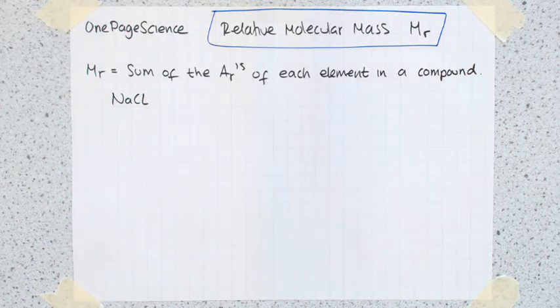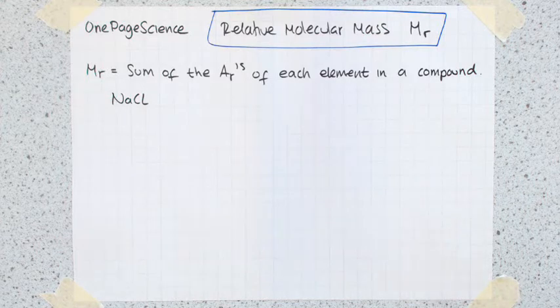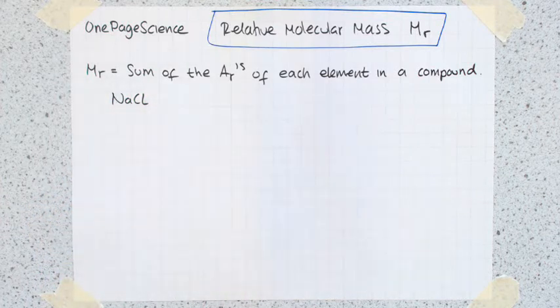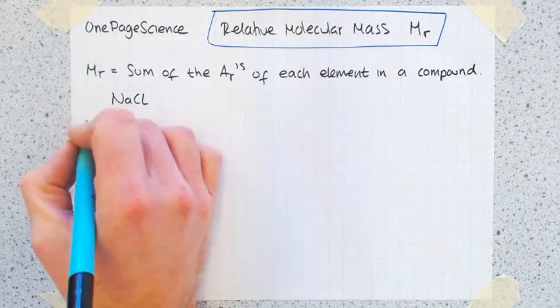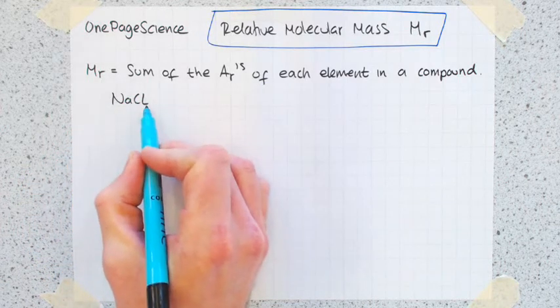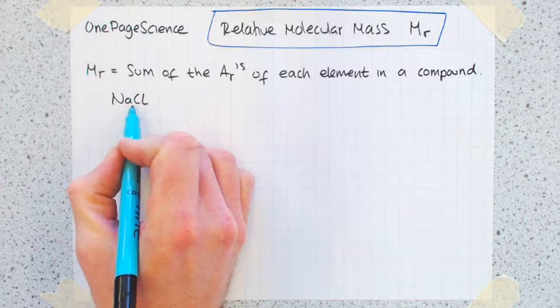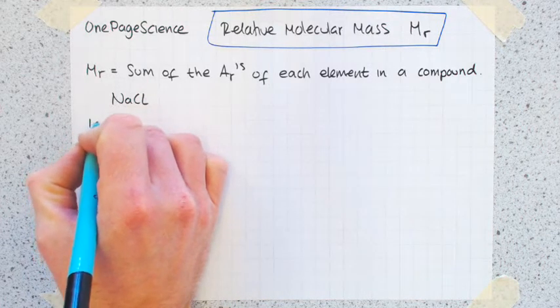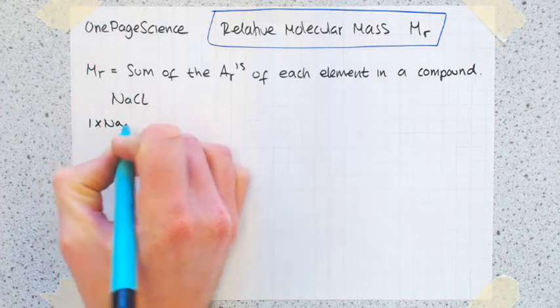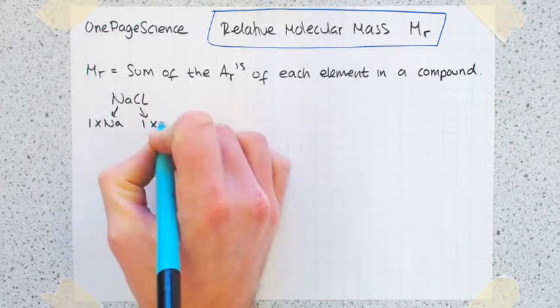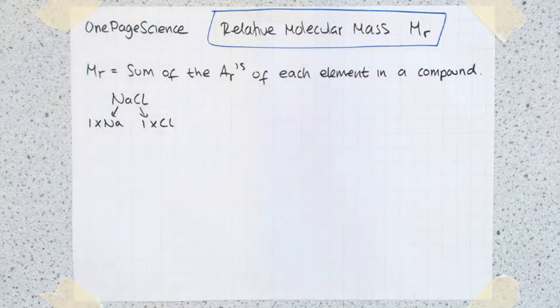You might be asked to work out what's the relative molecular mass of sodium chloride. The first thing you've got to do is understand what this formula is telling you about the compound. What it's telling you is that you have one sodium and one chlorine. The reason you know it's one is because there's no numbers subscript down here or here. So we've got one times sodium and one times chlorine.